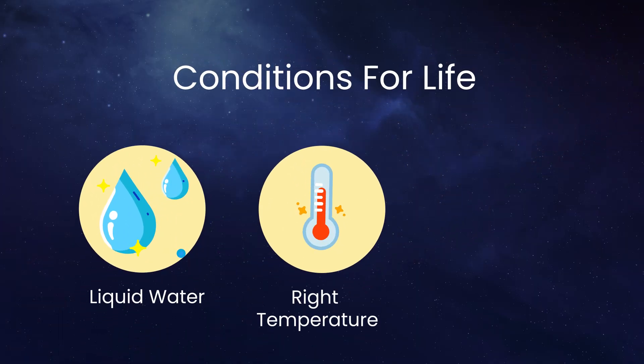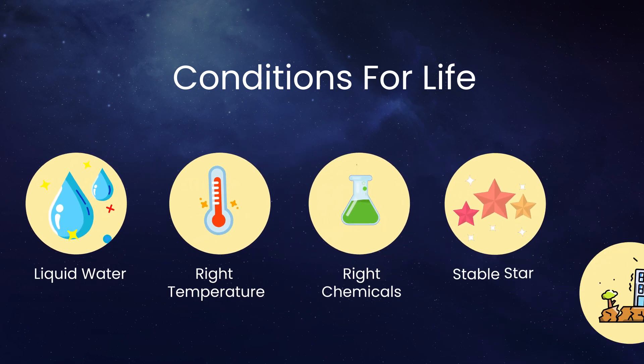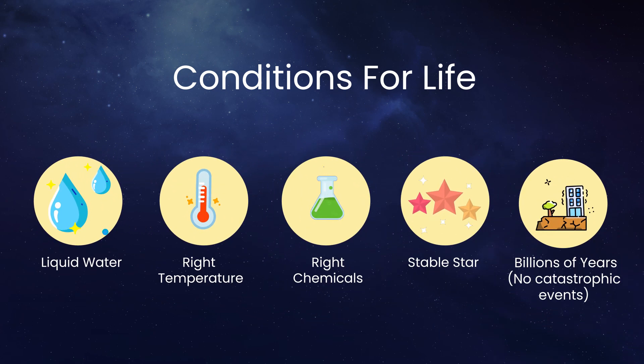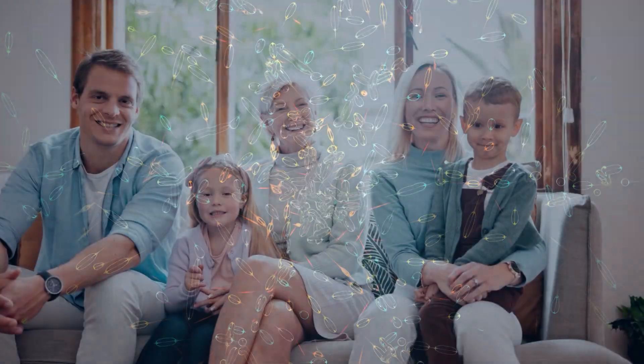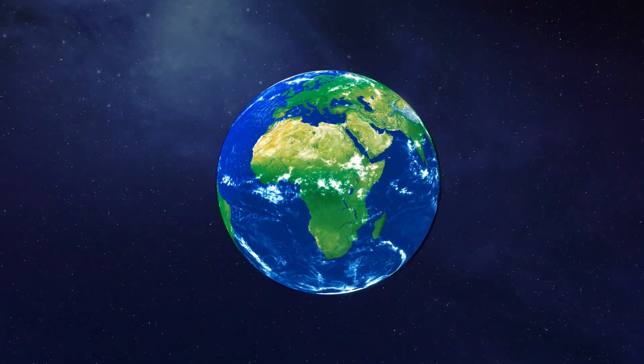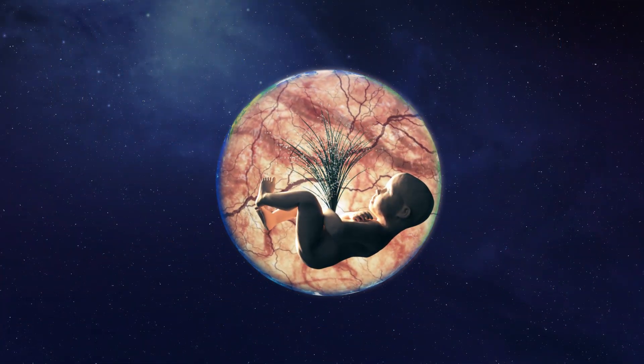Life requires an almost impossible combination of conditions: liquid water, the right temperature, the right chemicals, a stable star, and billions of years without catastrophic events. Even if microbial life exists somewhere else, intelligent life like humans might be unbelievably rare. Perhaps unique. Until we find even a single microbe elsewhere, life remains one of the rarest things in the universe.